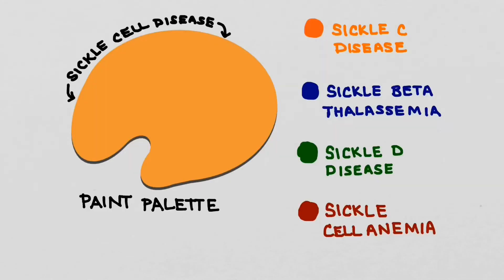To illustrate this, think of sickle cell disease as a paint palette. There are different colors that go on the paint palette, each color representing a type of sickle cell disease.